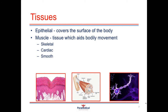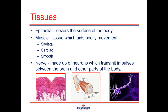Another type of tissue is nerve tissue. Within the body we have trillions of different nerves, and these are important for transmitting impulses between the brain and other parts of the body. We also have different types of connective tissue, which includes blood, bones, and the different types of ligaments and tendons within the body.